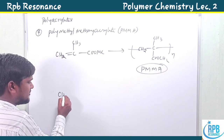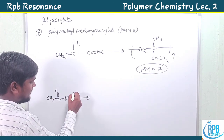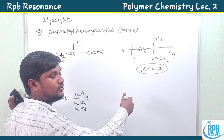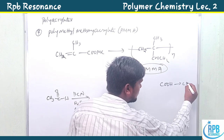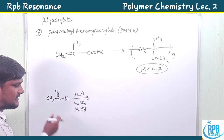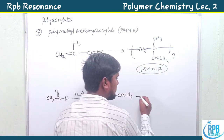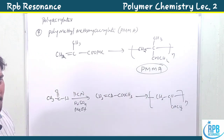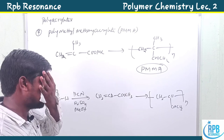Instead of acetone, if we use acetaldehyde (CH₃CHO) and treat it with HCN followed by H₂SO₄, we get –COOH after hydrolysis. Then in the presence of methanol, –COOH is converted to –COOCH₃ (ethyl ester). This produces ethyl acrylate with structure CH₂=CH–COOCH₃. Polymerization gives the repeating unit –[CH₂–CH–COOCH₃]–, which is polyethyl methacrylate.